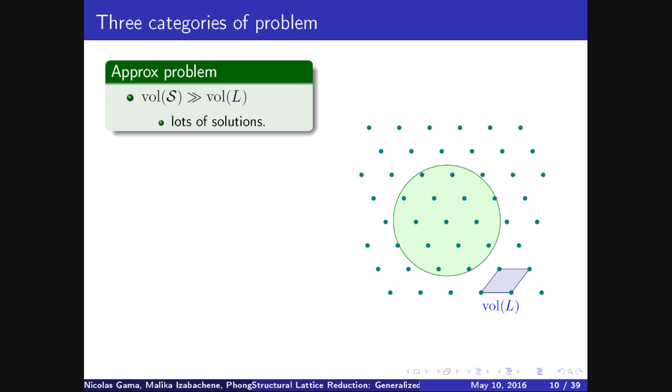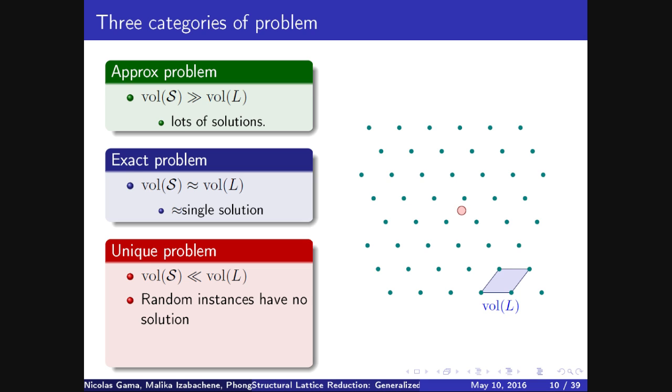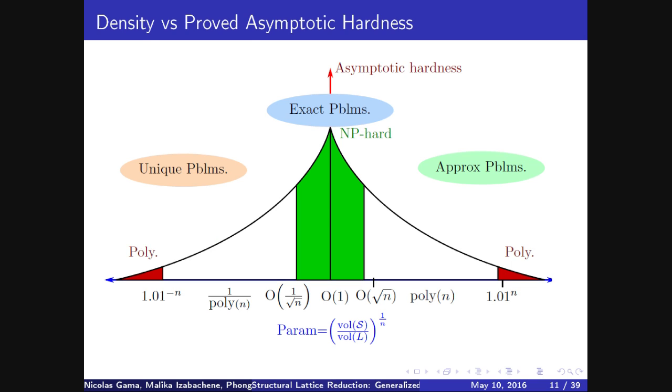There are three flavors of this problem. There are the approximation problems, where the ball is much larger than the lattice volume. So in this case, there are exponentially many solutions, even if you translate the ball or if you take another norm like square balls. There are the exact problems, where you take the ball approximately equal to the lattice volume, so if you translate it, there will always be approximately a single solution. And there are the unique problems, where the volume of the ball is much smaller than the lattice. So if you pick a ball at random, it will contain no solution at all, and only specially crafted solution contains a very unique point.